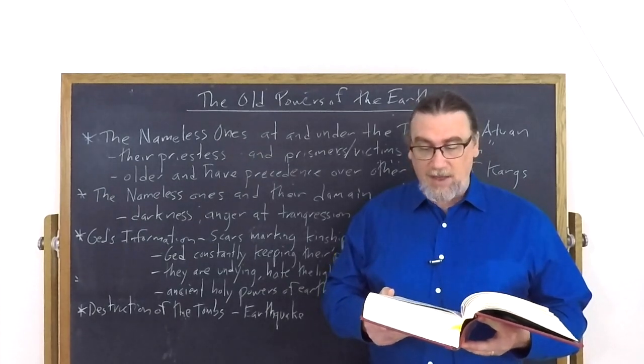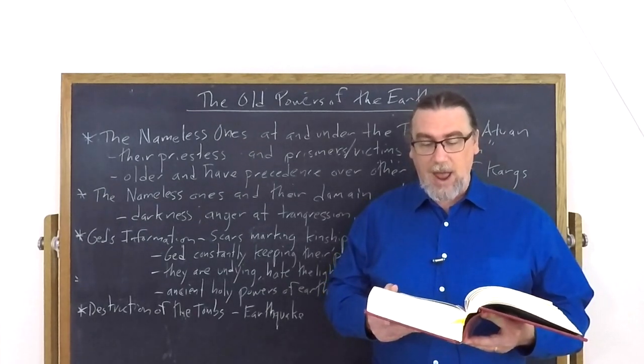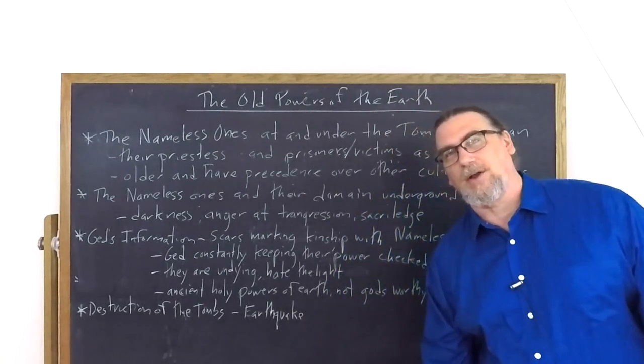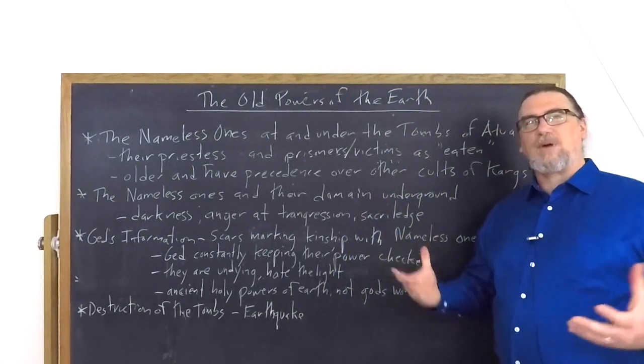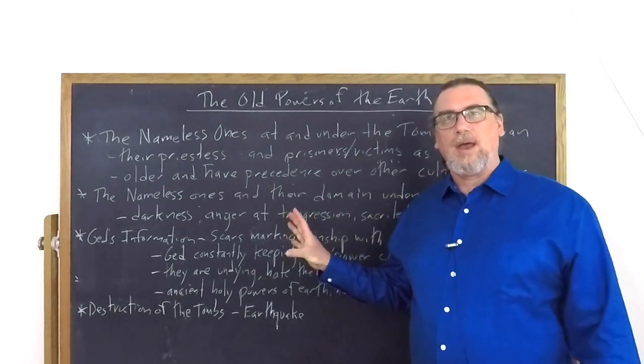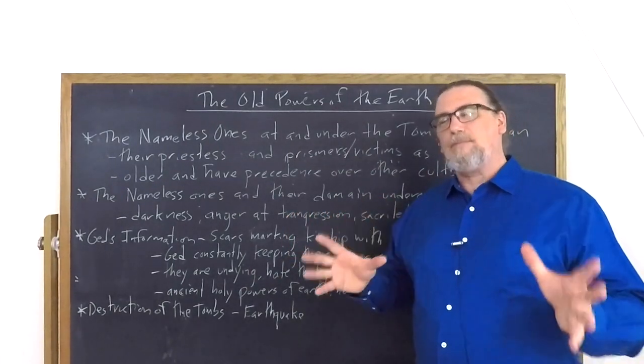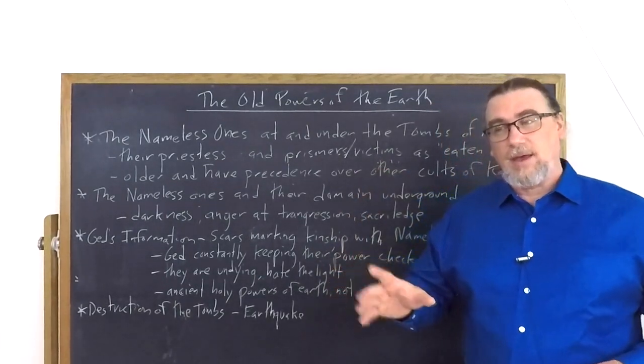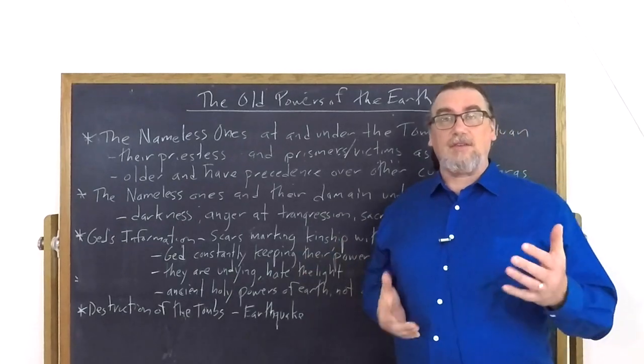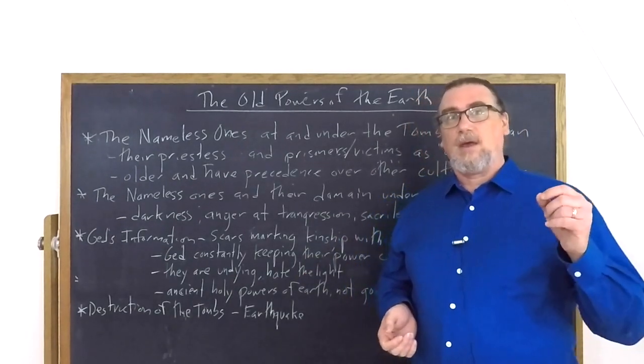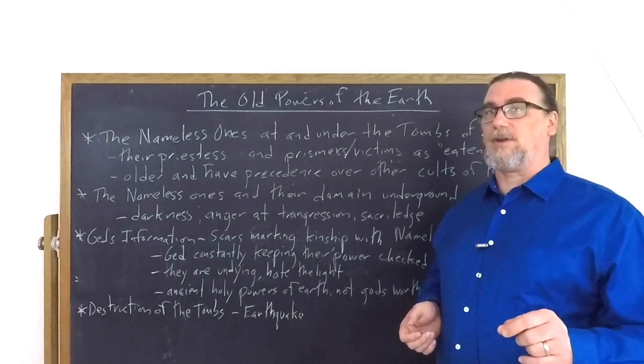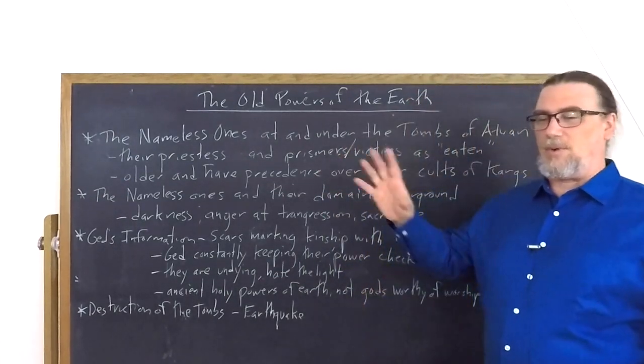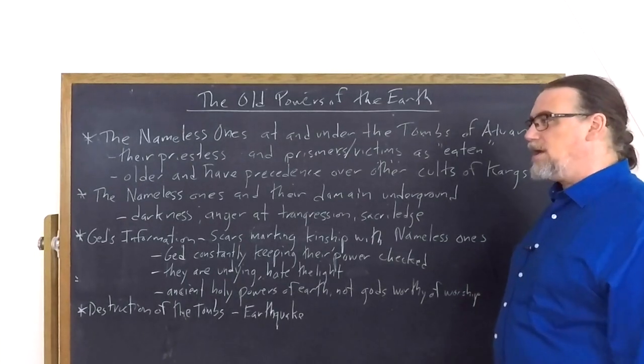She looks to Ged and says, 'You held it back. You held back the earthquake, the anger of the dark.' So the ancient powers, they manifest that power in something that's impotent to affect Arha or Tenar and Ged but brings about the death of many of the other people in that area, including Kossel herself, who's meddling around in the throne room and underneath the earth.